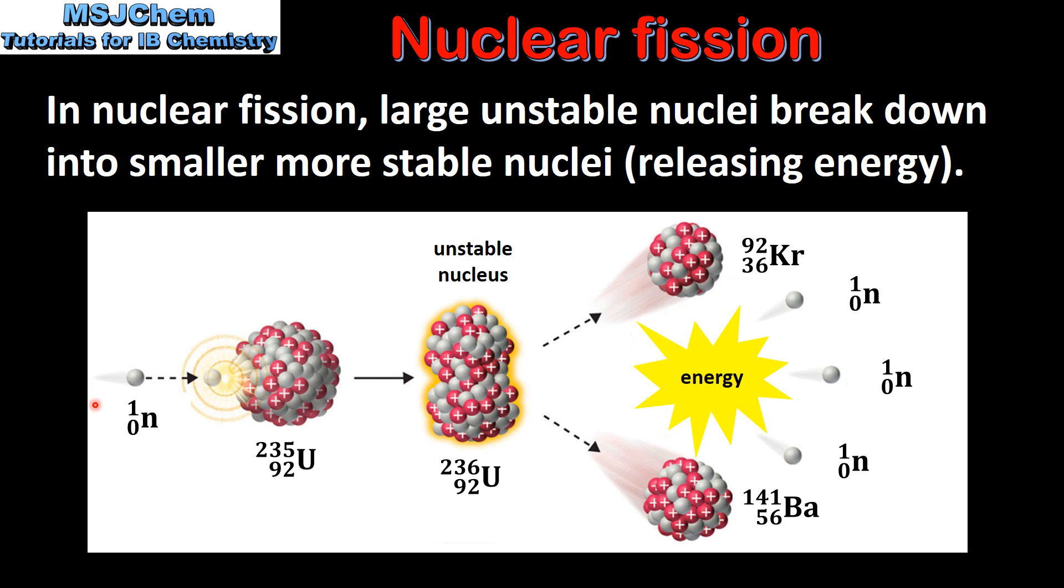In this diagram we have the nuclear fission of uranium-235. The fission of uranium-235 is triggered by the absorption of a neutron. The absorption of a neutron produces uranium-236 which has an unstable nucleus.